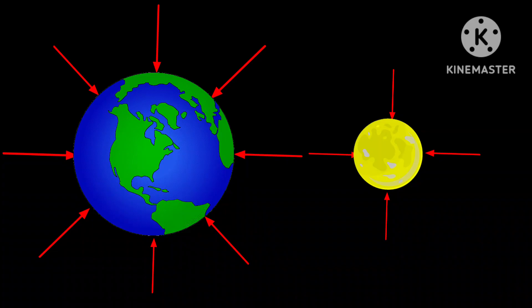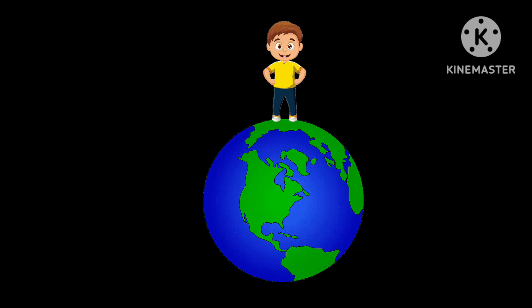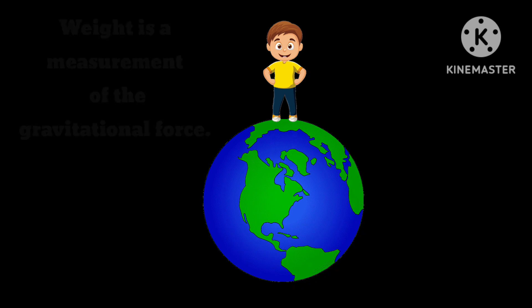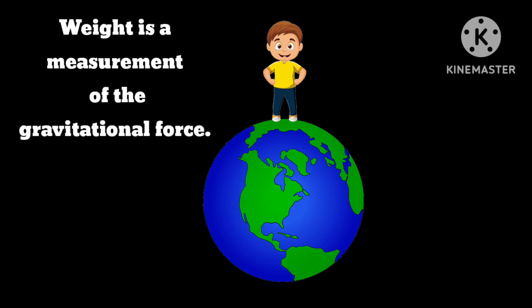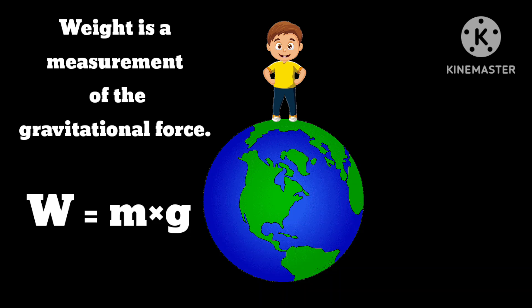Objects with more mass have more gravity. Earth's mass makes a combined gravitational pull on all the mass in your body — that's what gives you weight. Weight is a measurement of the gravitational force. Hence, weight is equal to mass into acceleration of gravity.